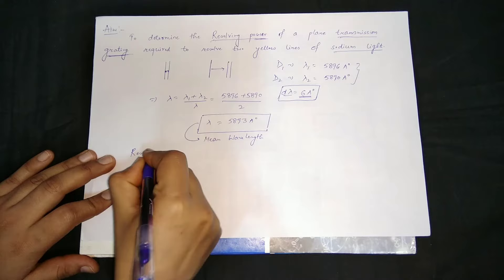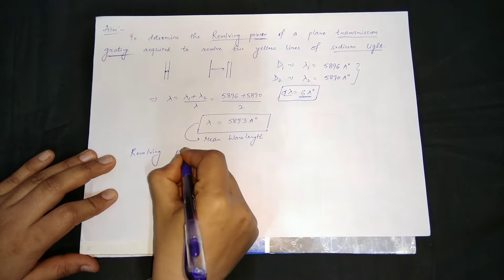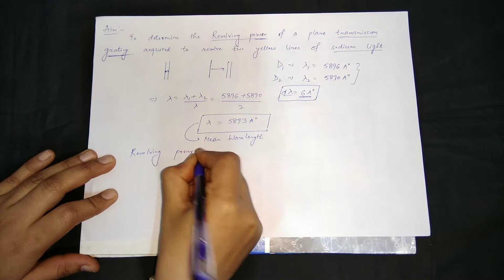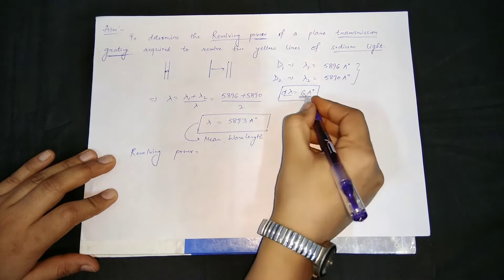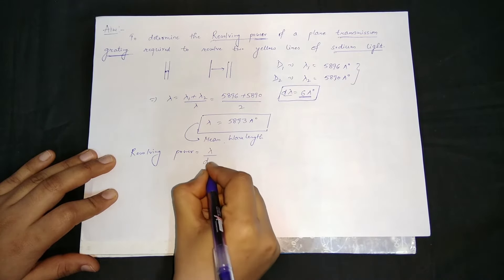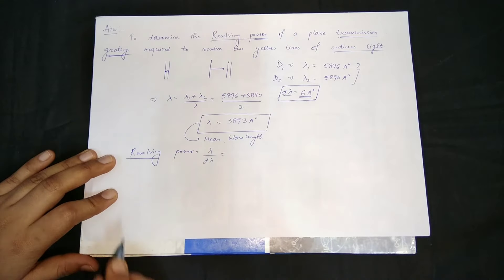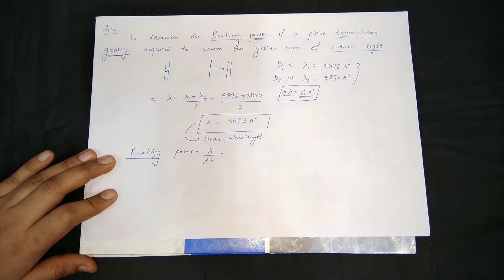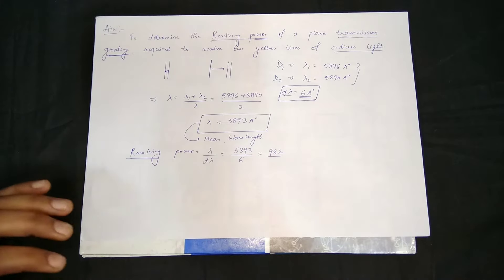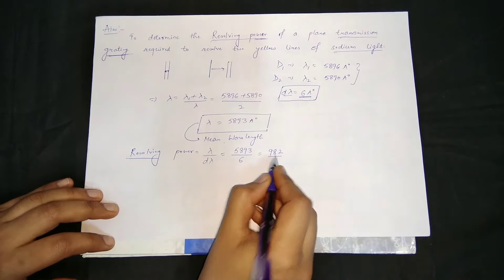The formula for resolving power is mean wavelength divided by change in wavelength, that is lambda divided by D-lambda. This is the experimental formula of the resolving power. We can also see the exact theoretical formula of the resolving power of a transmission grating, which we need to confirm from our experiment.